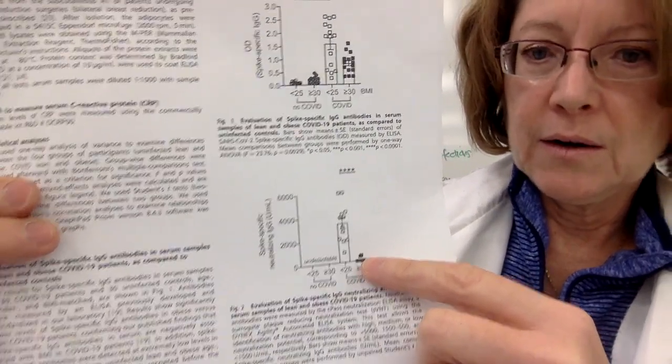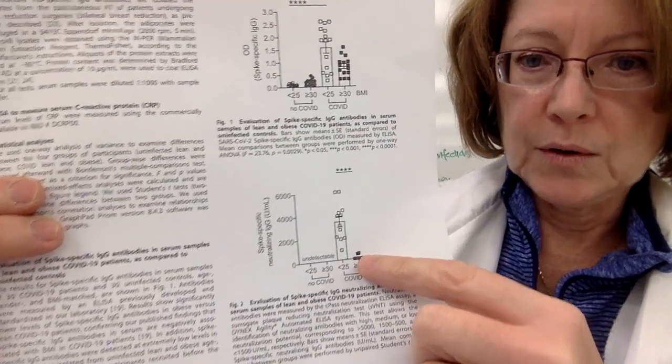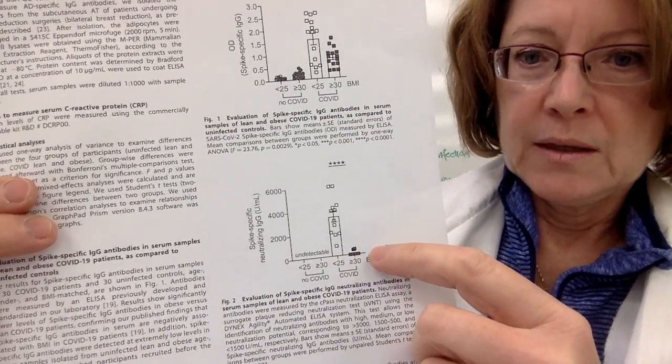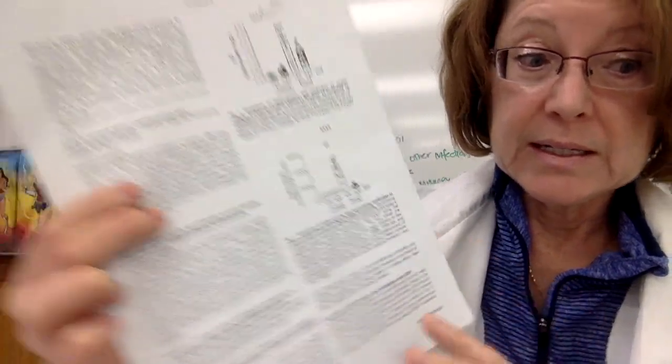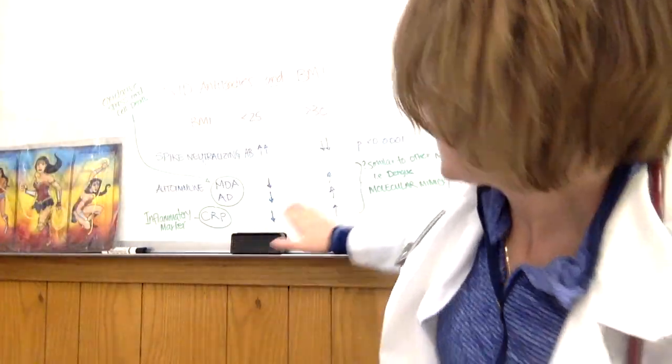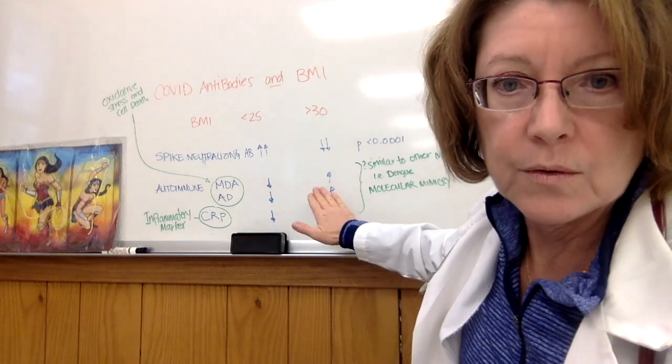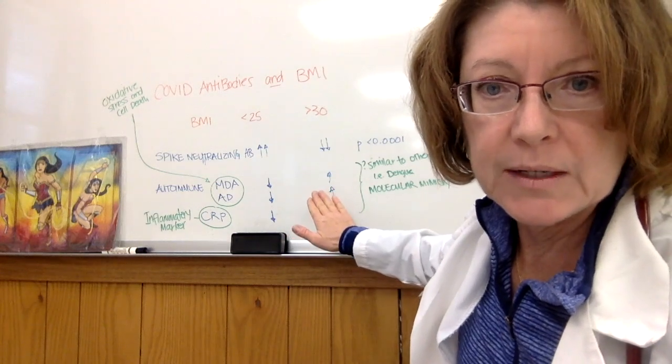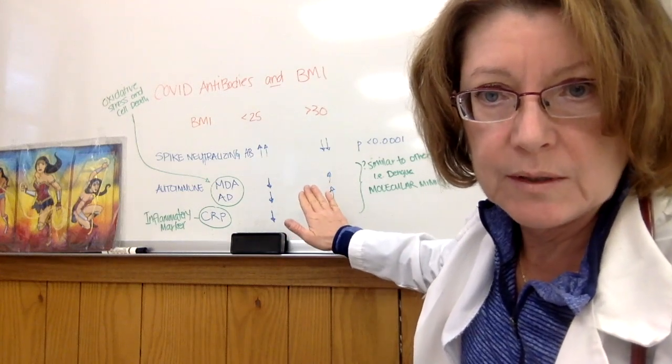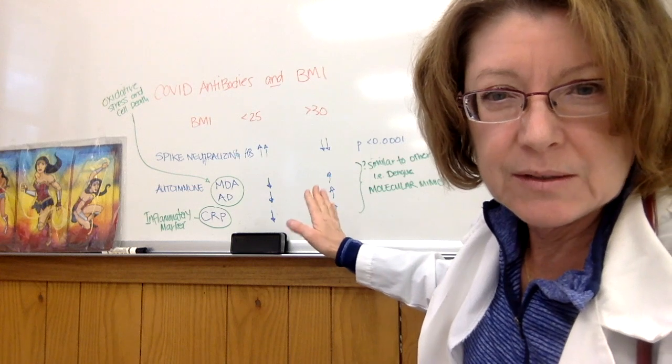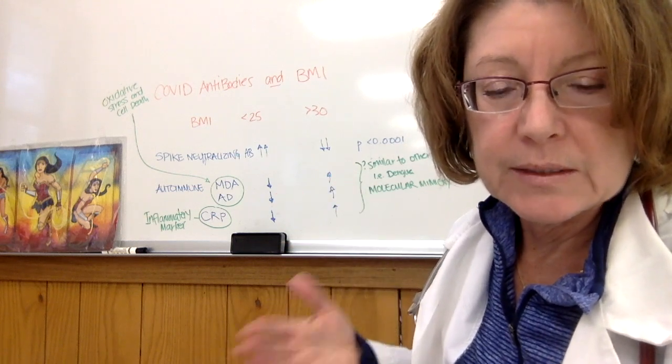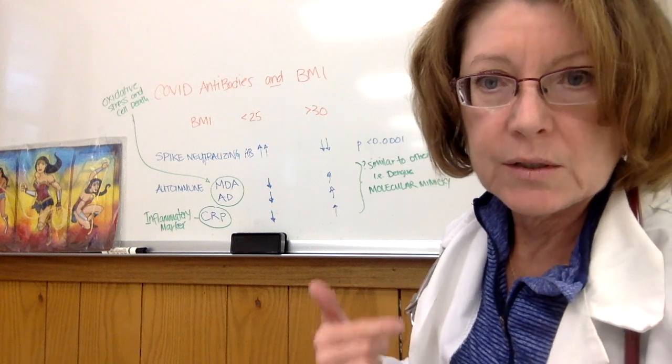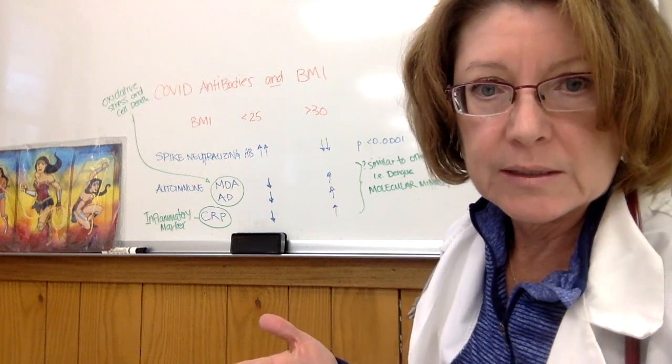And the other problem is that the cohort of patients with a BMI over 30 did make a lot of auto antibodies. So antibodies to their own system. What does this sound like? What are auto antibodies? Auto antibodies occur in disease states like lupus and rheumatoid arthritis and things like that.